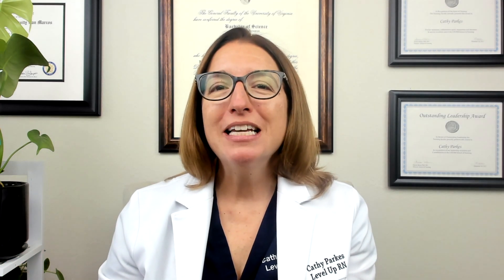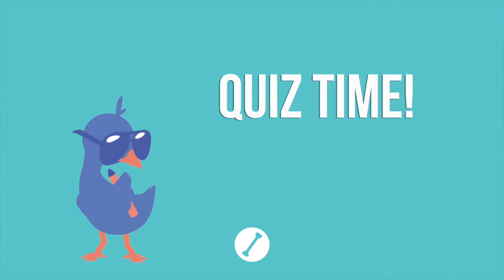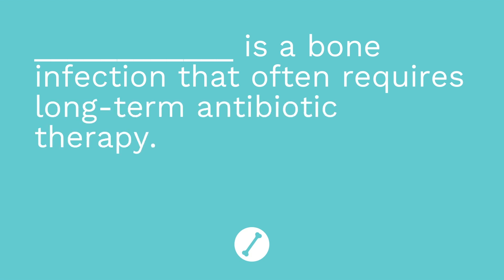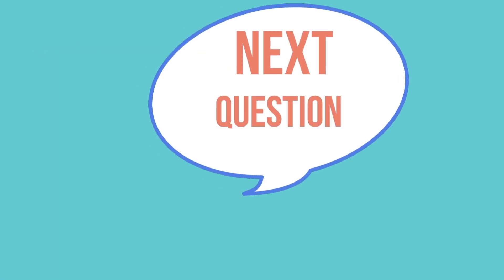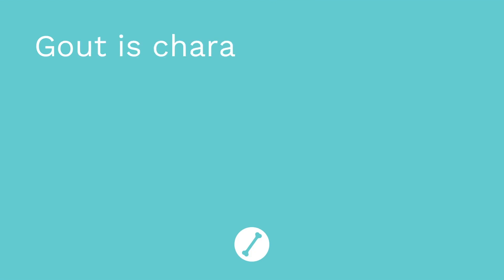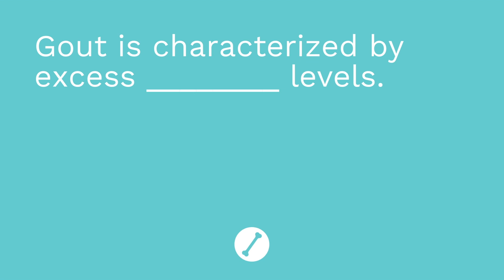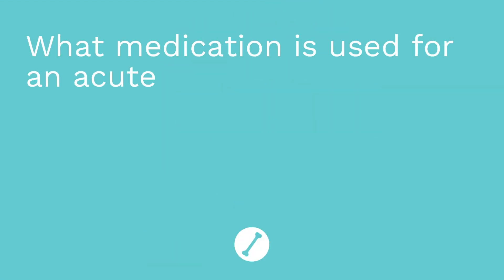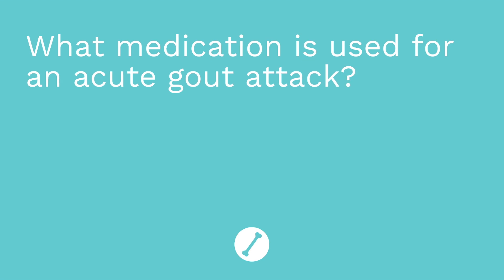It's time for a quiz. I have three questions for you. First question: blank is a bone infection that often requires long-term antibiotic therapy. The answer is osteomyelitis. Question number two: gout is characterized by excess blank levels. The answer is uric acid. Question number three: what medication is used for an acute gout attack? The answer is colchicine — or cool chicken, like my little story. I hope this video has been helpful. Take care and good luck with studying.